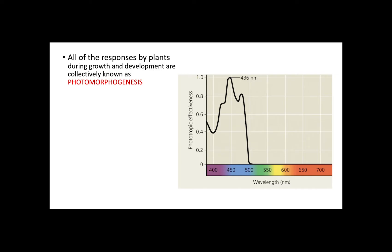All of the responses to light by plants are known as photomorphogenesis. This includes all aspects of growth and development that are initiated or influenced by light. Depending on the light wavelength, plants will respond differently. To know what wavelength drives a particular process, the action spectrum graph needs to be observed. This graph shows the profiles of the relative effectiveness of different wavelengths.